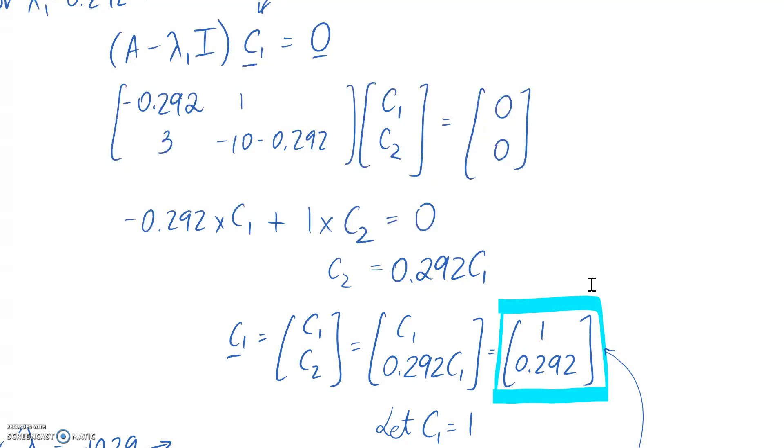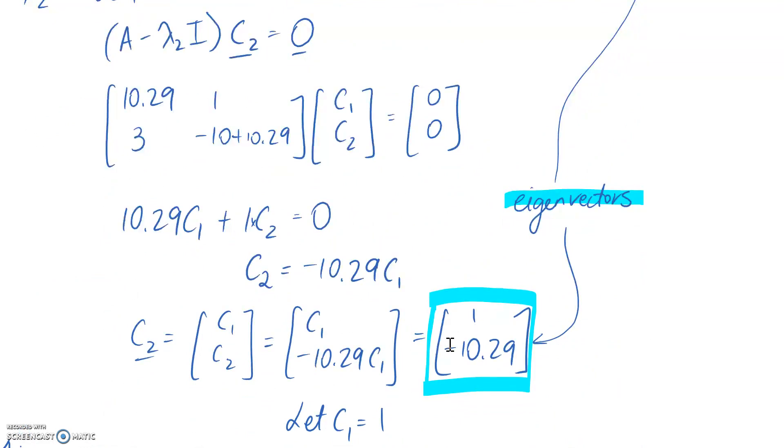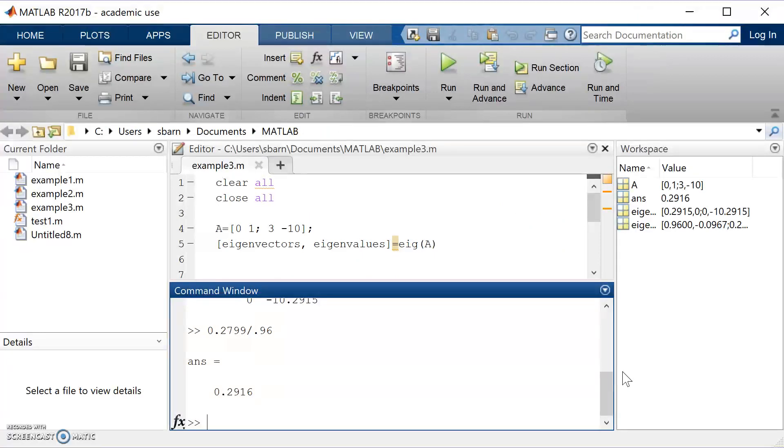We can do the same sort of thing for the second eigenvector. So for that one, we got negative 10.29. If we do a ratio divided by 1, leaves us with negative 10.29. So let's verify that that's the same in MATLAB.